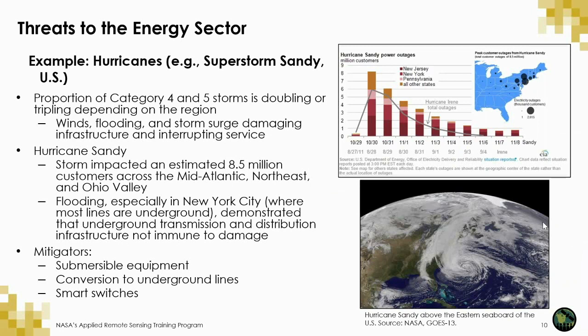Hurricanes are another significant risk to energy management. In the U.S., the proportion of Category 4 and 5 storms is doubling and even tripling depending on the region, resulting in dangerously high winds, flooding, and storm surge, which can damage infrastructure and interrupt service. Hurricane Sandy was the deadliest, most destructive, and strongest hurricane of the 2012 Atlantic hurricane season, inflicting almost 70 billion dollars in damage and killing over 200 people across the Caribbean, U.S., and Canada. Storm surge from the hurricane hit New York City and flooded even subways, cutting power for approximately 8.5 million customers. Earth observations can support weather and climate monitoring and planning.